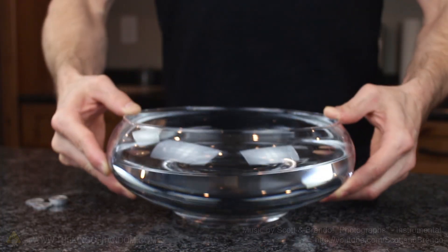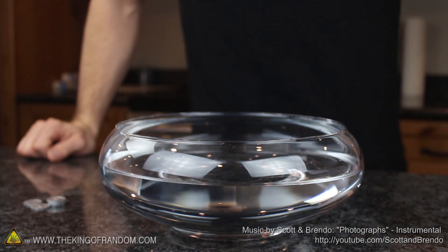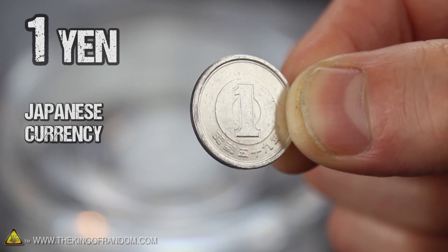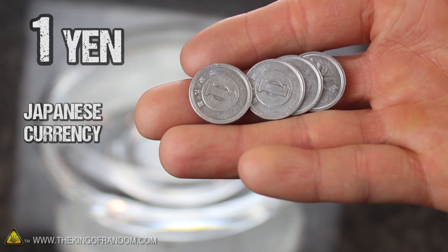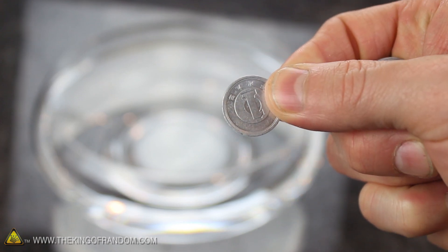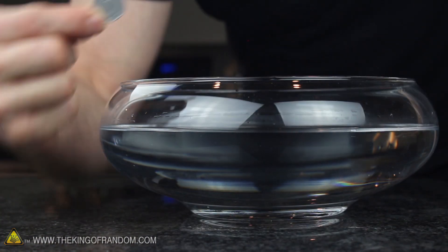For this demonstration, you're gonna need a bowl of water and a handful of 1 yen coins. 1 yen coins are kinda like Japanese pennies, and there's a good chance you can get some if you're really, really nice to your neighborhood Japanese exchange students. These common coins are around 2.5 times lighter than our pennies because they're minted from aluminum instead of zinc.